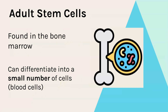In contrast, adults do have stem cells but we find them in limited places such as the bone marrow. These bone marrow cells, which are stem cells, can differentiate into different cells but only a small number of different types of cells, which are the blood cells.